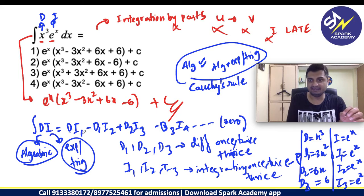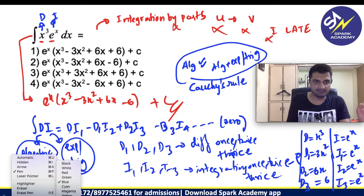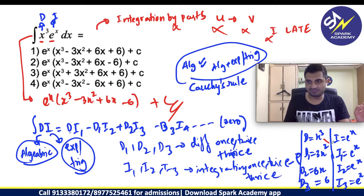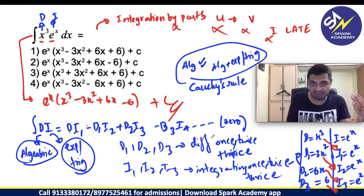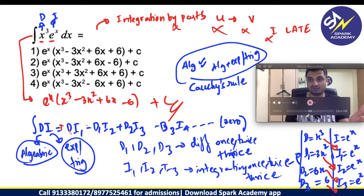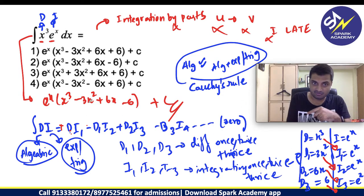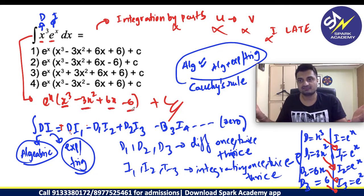Now if you use the formula DI₁, DI₁ means x³ into eˣ minus 3x² into eˣ plus 6x into eˣ minus 6 into eˣ. Alternating positive negative signs. First one you are only taking D, not D₁: DI₁ minus D₁I₂ plus D₂I₃ minus D₃I₄ and so on. I can take eˣ common and I will get x³ - 3x² + 6x - 6 + C.